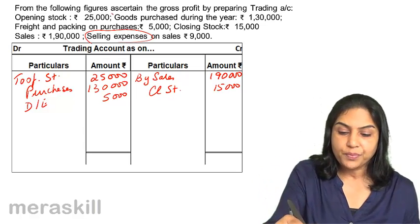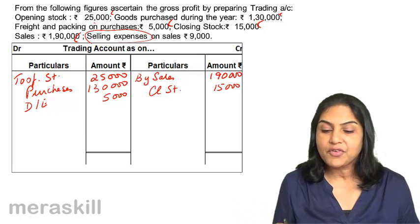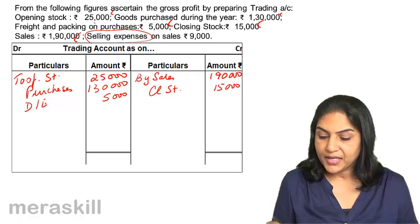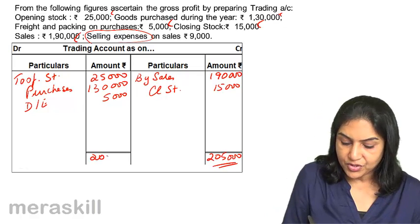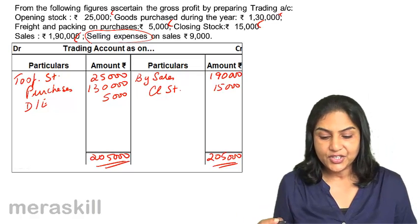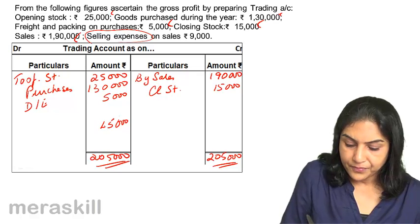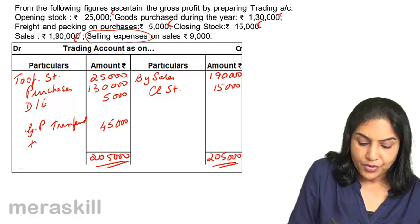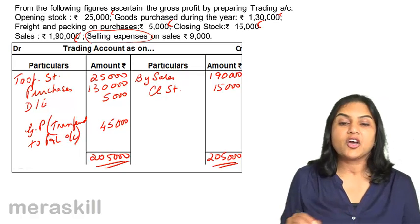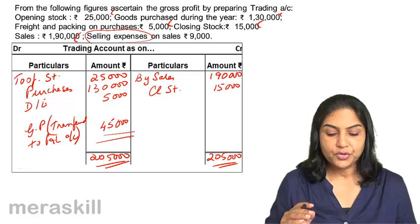So have we covered everything? We have taken opening stock 25,000, goods purchased 1,30,000, direct expenses 5,000, closing stock 15,000, and sales 1,90,000. We balance this like any other ledger account, and we get a gross profit of 45,000 — transferred to profit and loss account.